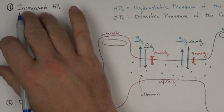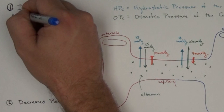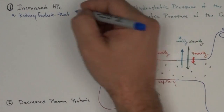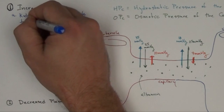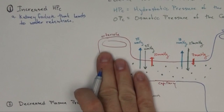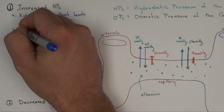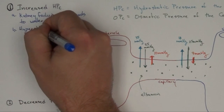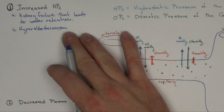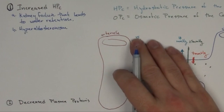Let's go into a little more detail about what can actually increase the hydrostatic pressure in the capillary (HPC). One cause is any kind of kidney failure that leads to water retention. If the kidneys can't get rid of the fluid, that water backs up in the arterial and increases HPC. Hyperaldosteronism, or anything causing hypernatremia — too much sodium — causes increased sodium retention, increased reabsorption of water, too much fluid, and pushes these pressures up.